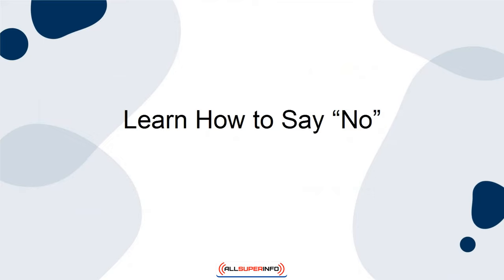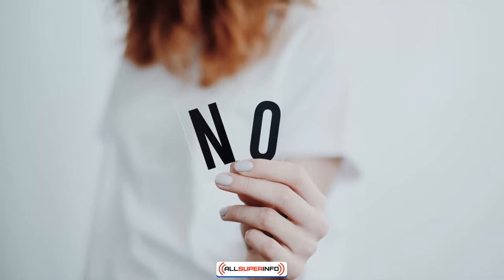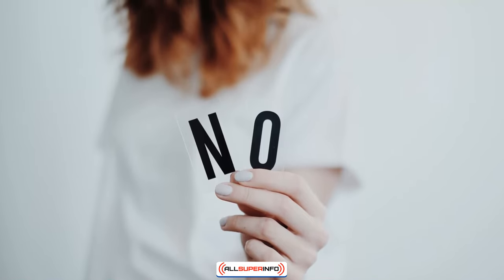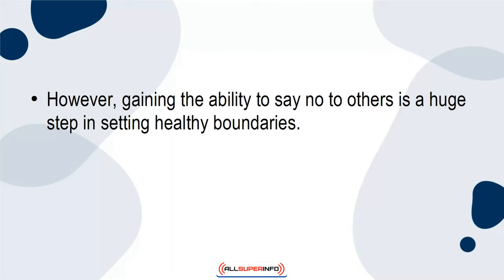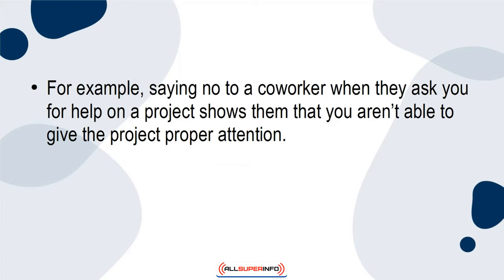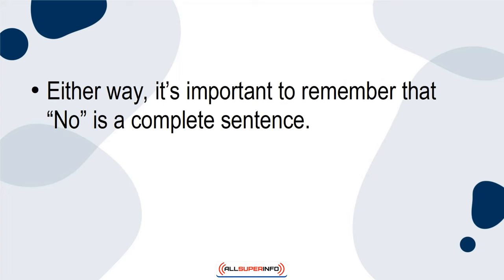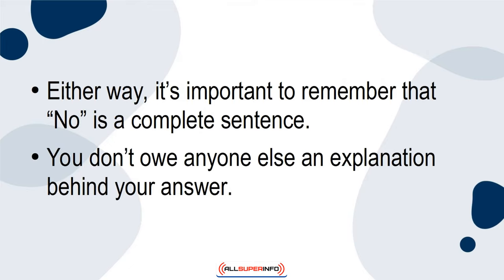Learn how to say no. No is a very powerful statement and many people are afraid to use it for fear of offending someone or hurting someone's feelings. However, gaining the ability to say no to others is a huge step in setting healthy boundaries. Saying no to another person will look different depending on your relationship with that individual. For example, saying no to a co-worker when they ask you for help on a project shows them that you aren't able to give the project proper attention. You may be too busy with other assignments or simply don't want to help. Either way, it's important to remember that no is a complete sentence. You don't owe anyone else an explanation behind your answer.